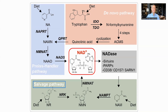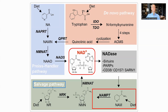Meanwhile, the other precursors use the salvage pathway. NR is converted by the NRKs into NMN, while nicotinamide is converted by NAMPT into NMN. In either case, NMN is then converted by NMNAT into NAD.